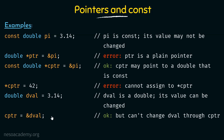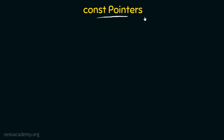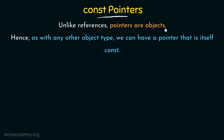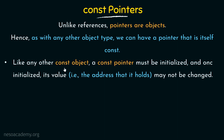CPTR is not a constant pointer — it is just pointing to a constant double type. Now, is it possible to have a constant pointer itself? Can we make the pointer itself constant? Coming to constant pointers, unlike references, pointers are objects. As with any other object type, we can have a pointer that is itself a constant. Like any other constant object, a constant pointer must be initialized, and once initialized, its value — that is the address it holds — may not be changed.